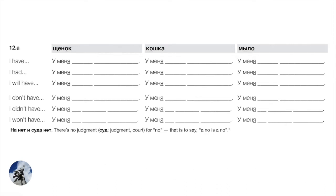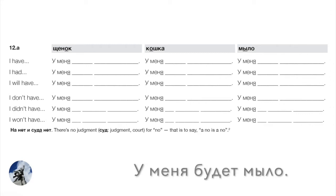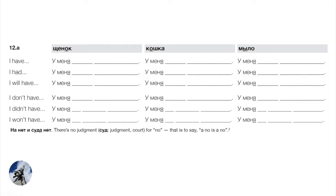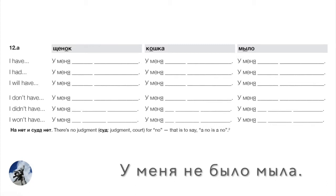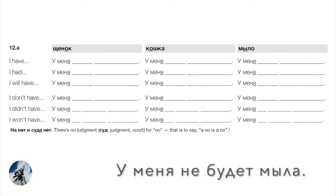Now a neuter example — мыло (soap). Present: У меня есть мыло. Past: У меня было мыло. Future: У меня будет мыло. For non-existence we go from мыло to the genitive мыла — you can't hear the difference due to vowel reduction, but we need the genitive. У меня нет мыла. Past: У меня не было мыла. Future: У меня не будет мыла.